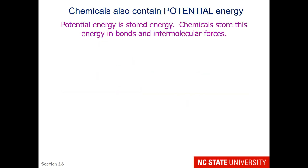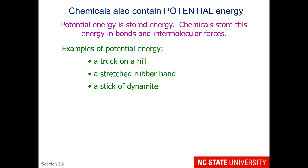Chemical bonds contain what's called potential energy. Chemicals store energy in either bonds or intermolecular forces. Examples of potential energy include a truck on a hill that's not moving — it has a wheel chuck — but as soon as you remove that wheel chuck, the truck turns its potential energy into kinetic energy. A stretched rubber band also has potential energy; as soon as you release it, it turns into kinetic energy and moves.